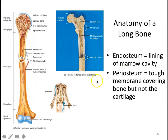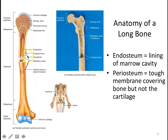Lining the inside and outside of your bone — lining the marrow cavity and lining the outside of the bone itself — is going to be epithelial tissue. Lining the marrow cavity we call it endosteum, and lining around the bone we call this periosteum. It's a membrane with some connective tissue and epithelial tissue. You can see the periosteum being peeled away here, and the endosteum would be lining the inside.